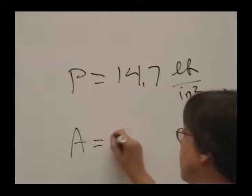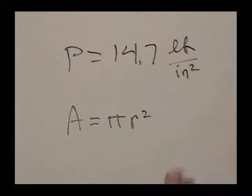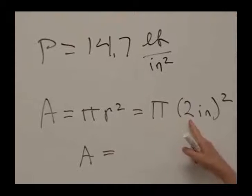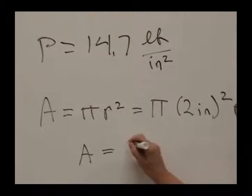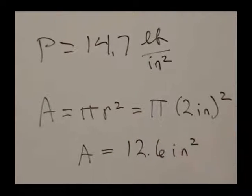The area is the area of that circle of the disc, pi r squared. We can estimate the radius being 2 inches, and that will give us an area of approximately 12.6 square inches.